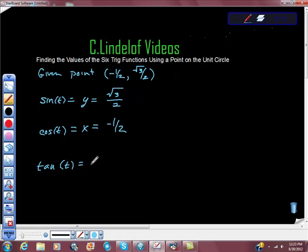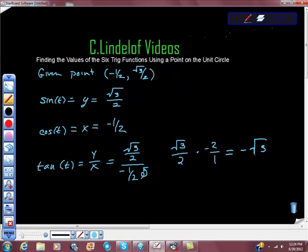The tan value, and we know this, the tan is y over x, so that's equal to square root three over two over negative one-half. We can simplify that out. This is a complex fraction, so this thing comes up like that. So we get square root three over two times negative two over one, which is equal to negative square root three.